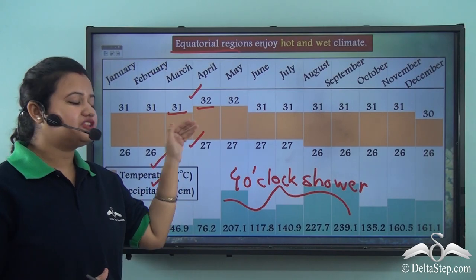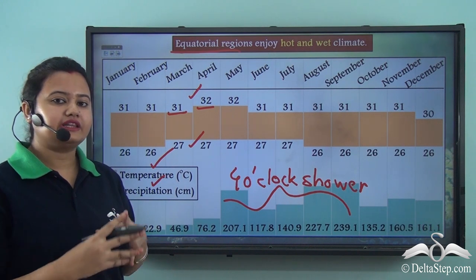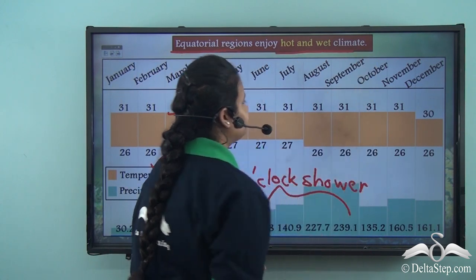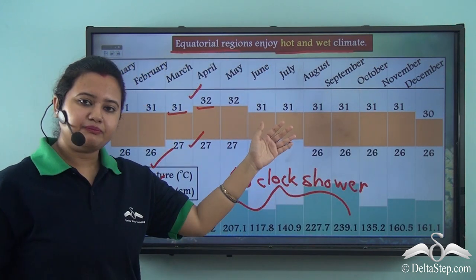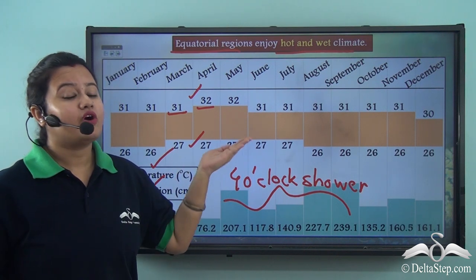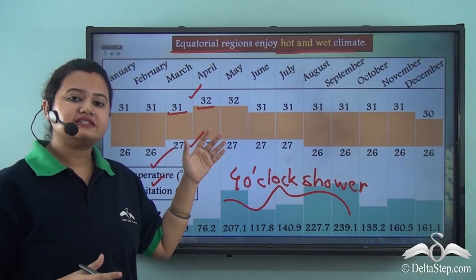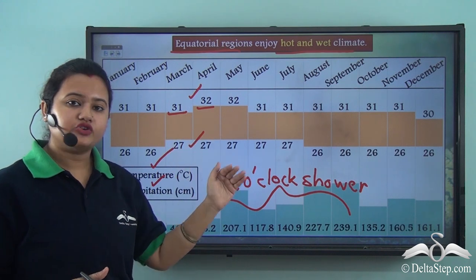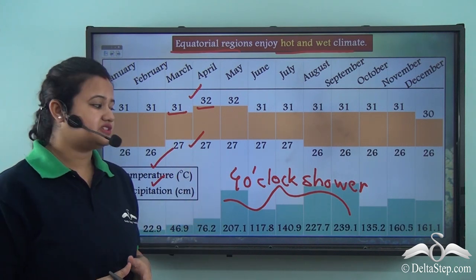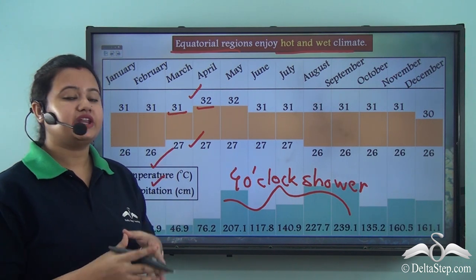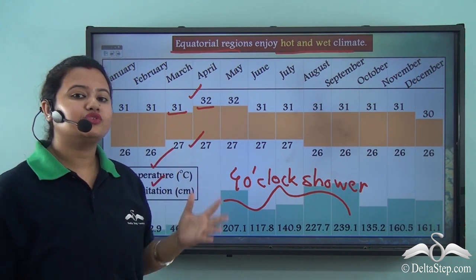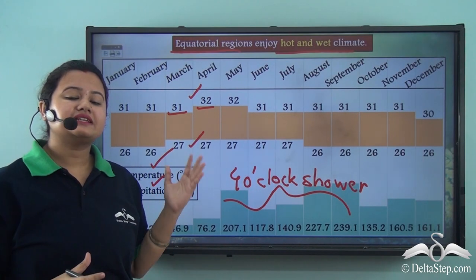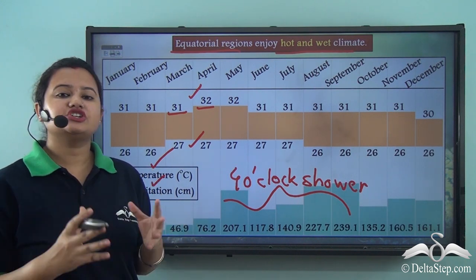Based on the temperature and precipitation conditions, we can infer that the equatorial region experiences a warm and wet climate — that is, high temperature and rain in almost every month of the year. In fact, in this region there is no winter season, no month when the temperature drops drastically, and none of the months are dry. Thus the equatorial region experiences a hot and wet climate throughout the year.